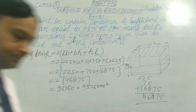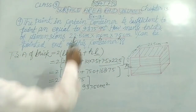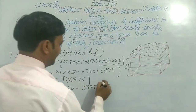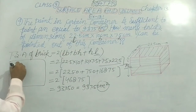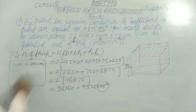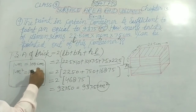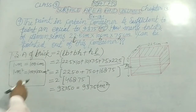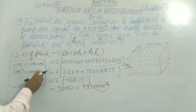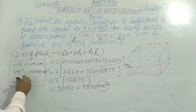Now I am going to tell you a simple thing — we have to convert units. This is in meter square and this is in centimeter square. So one meter square equals 10000 centimeter square. So we multiply to convert.